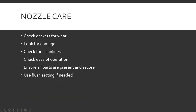Nozzle care: check gaskets for wear — if they're cracked or missing, replace them. Look for damage, make sure they're clean and not covered in mud, dirt, or soot. Check for ease of operation — make sure you can rotate through straight stream to fog pattern, and the valve opens nice and easy without having to really fight it. Make sure all parts are present and secure, and the pistol grip isn't loose. If you have a fog nozzle with debris or grit in it, use the flush setting to try and flush it out.